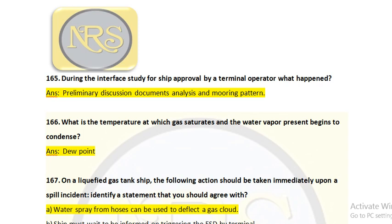Question number 166: What is the temperature at which a gas saturates and the water vapor present begins to condense? The answer is dew point. The temperature at which water vapor becomes condensed and forms condensed water is called the dew point. When the gas becomes saturated and water droplets are present, and if you condense the gas it becomes liquid — this is the dew point.